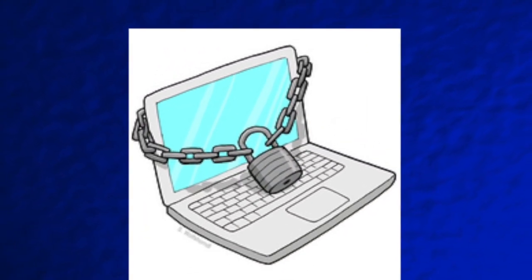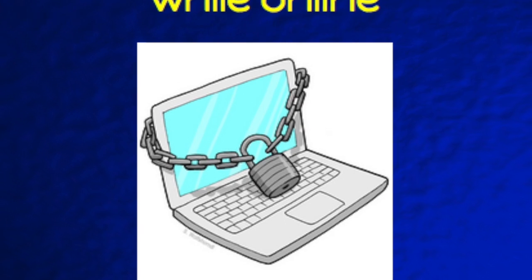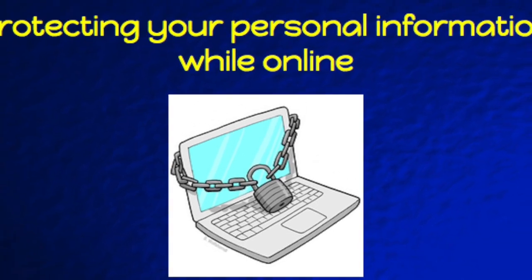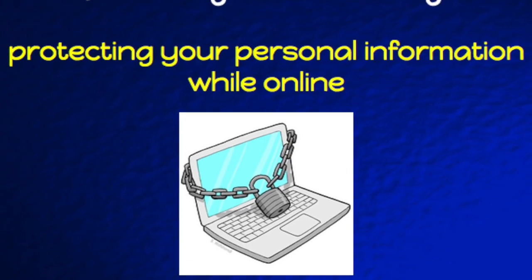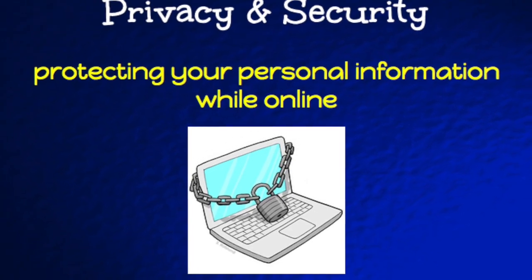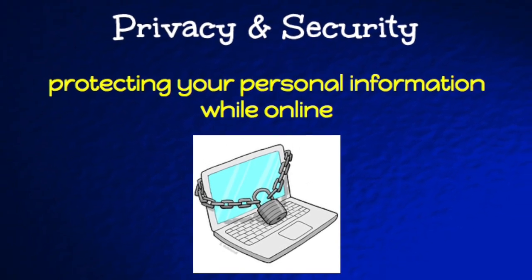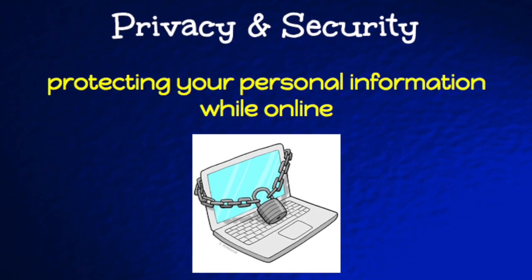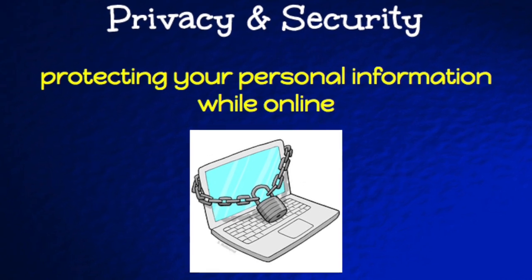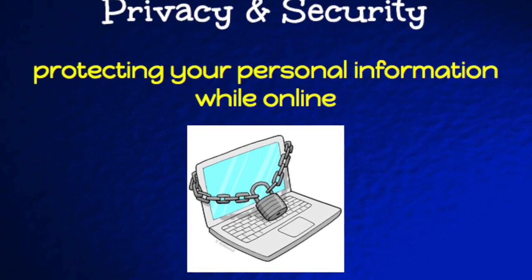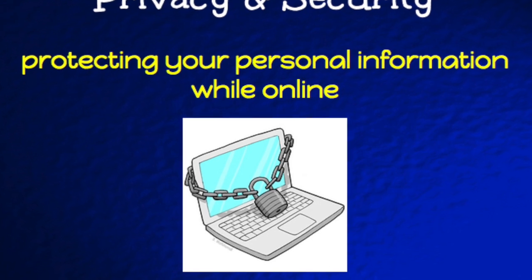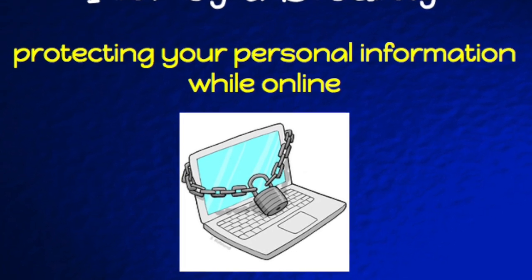The second theme is privacy and security. This dives deeper into the idea of internet safety, but it brings to light the role that each user plays in protecting their identities. Thinking about the safety of your passwords and keeping your information private is really important. In fact, the U.S. government has stated that the privacy of anyone under 13 is protected by federal law, and that's why users must be 13 to participate in any sort of open social networking.